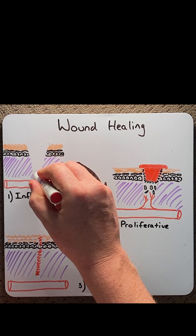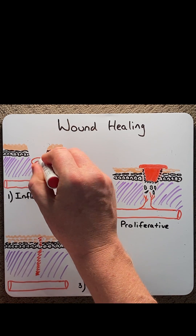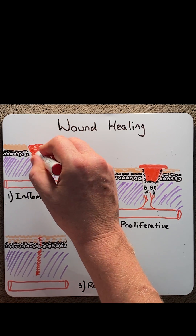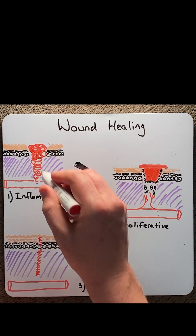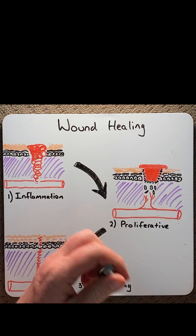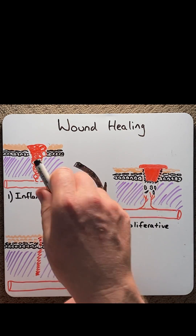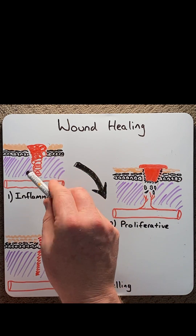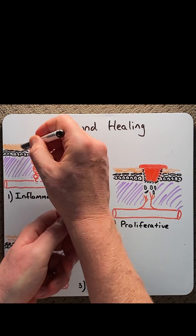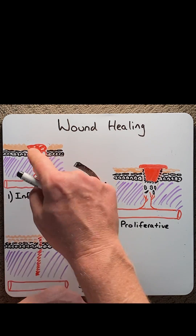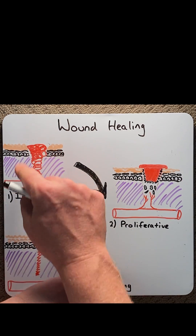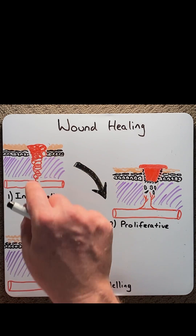the wound would fill with blood, and this first part of the inflammatory phase is known as hemostasis, which is blood clot formation. This blood clot, and ultimately the scab at the top, would seal off the wound and allow the area to be closed.